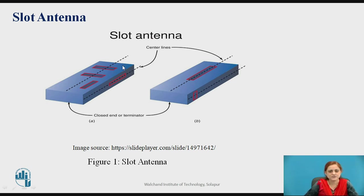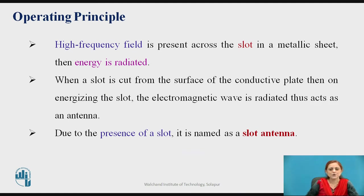This is how the structure of the slot antenna is shown. At the side of a waveguide or the conducting sheet you can make a slot. The center of the axis is considered for this metal sheet. Whenever the slot is cut with a length of lambda by 2, it gives you the slot antenna. You can also make a slot at the side of a waveguide. Whenever a high frequency field is present across the slot in the metallic sheet, the energy is radiated. When a slot is cut from the surface of the conducting plate and the slot is energized, an electromagnetic wave is radiated — thus it acts as an antenna.